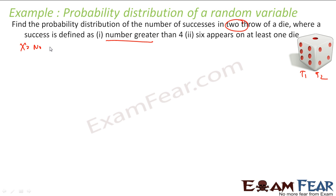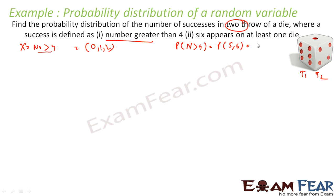x is the number of successes — getting a number greater than 4. x can have values 0, 1, or 2, because in both trials you may get a number less than 4 giving zero successes, in one trial a number greater than 4 giving one success, or in both trials a number greater than 4 giving two successes. Probability of getting a number greater than 4 is 2 by 6 (getting 5 or 6), and probability of number less than or equal to 4 is 4 by 6.